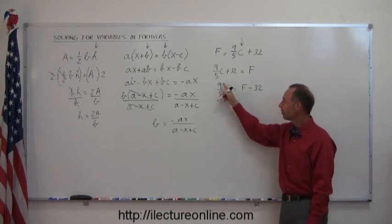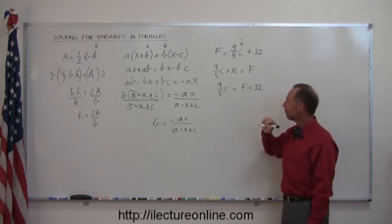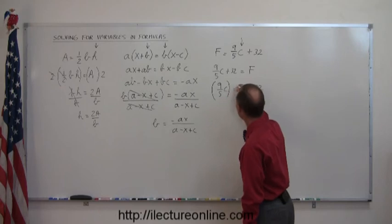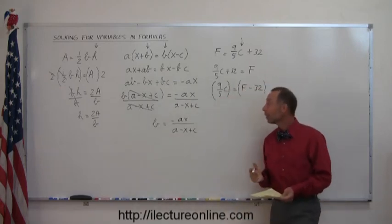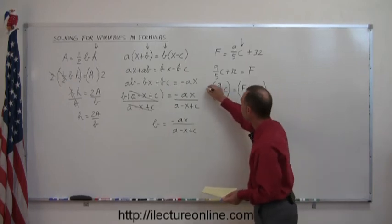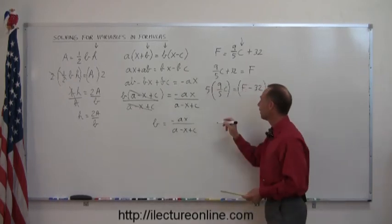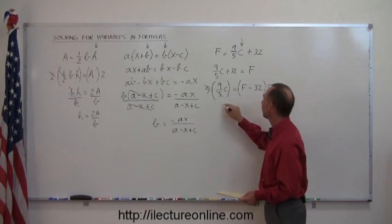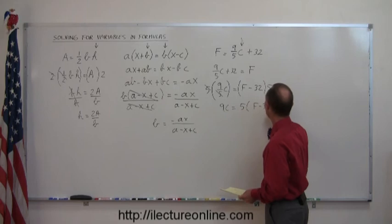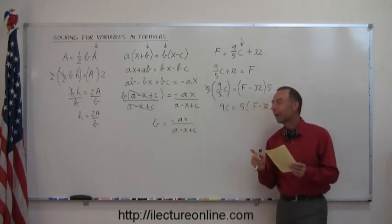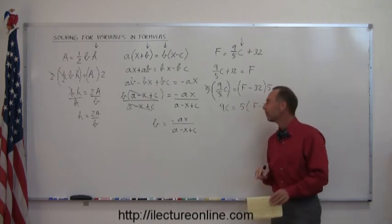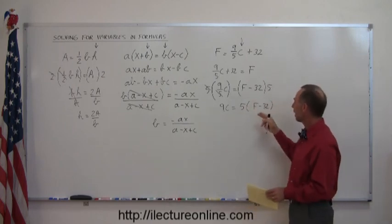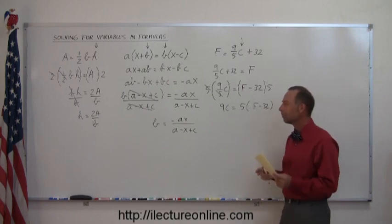Now notice I still have a fraction here, and I want to get rid of the fraction, so I'm going to multiply both sides of the equation by the common denominator. In this case the common denominator is just the number 5, so I multiply the left side by 5, I multiply the right side by 5, these 5s cancel out, I end up with 9C equals 5 times F minus 32. Again, it doesn't matter if I write the 5 behind the parentheses or in front, if I'm multiplying, it's called the commutative property, I can write 5 times that or this times 5, makes no difference.